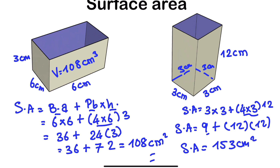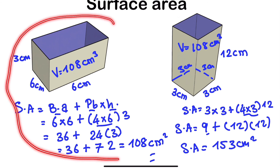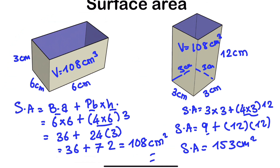To conclude: both cuboids have the same volume of 108 cm³, but different surface areas. If you were to construct both using expensive material, the first cuboid would be cheaper because its surface area of 108 cm² is less than the second's 153 cm². Thanks for watching — please subscribe, and you can use this as a math project.